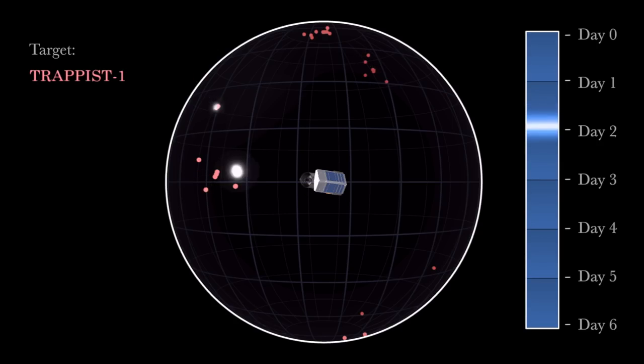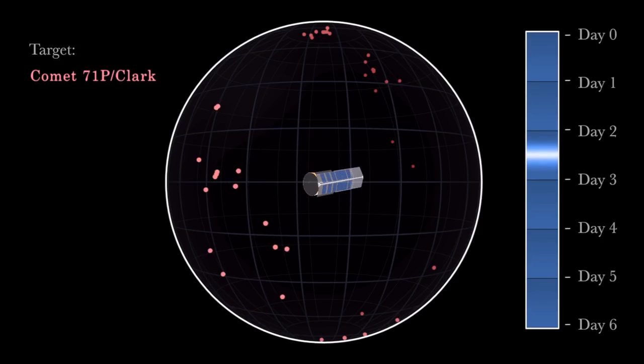Impressively, Spitzer works around the clock. Infrared telescopes on the ground require darkness and clear skies, and even Hubble can have limits on how much of its orbit around the Earth can be spent collecting data.